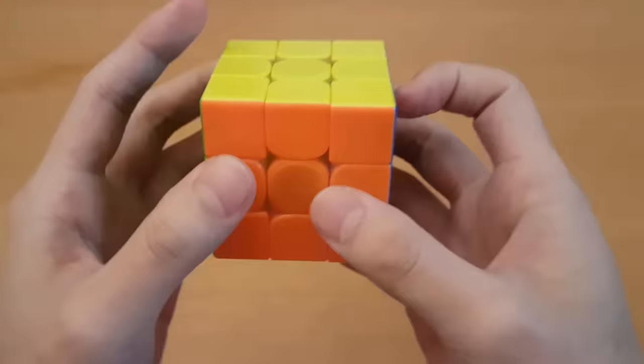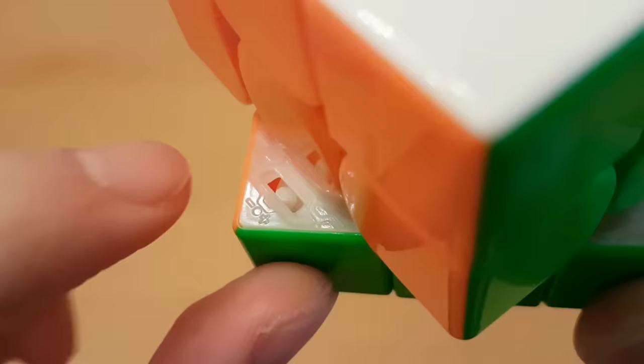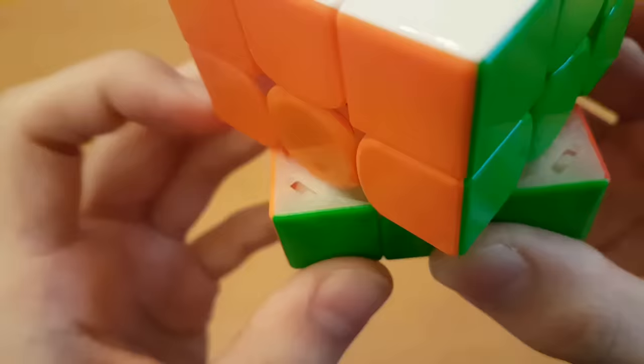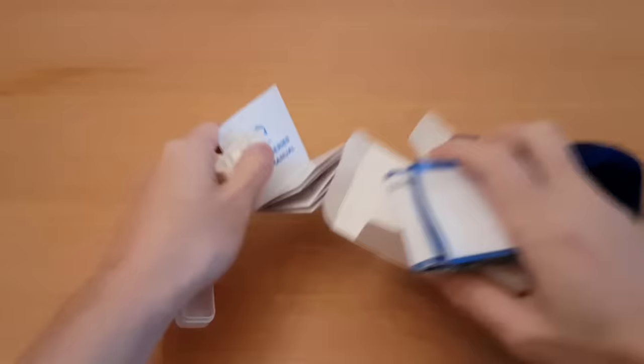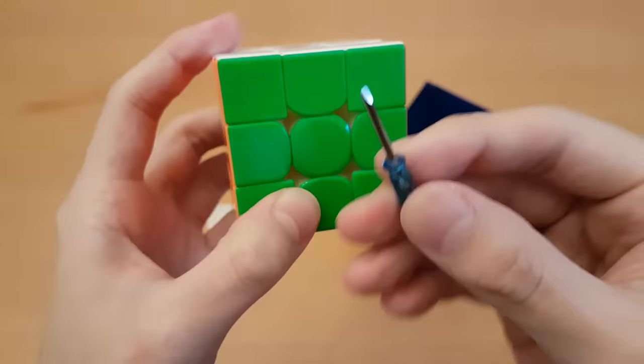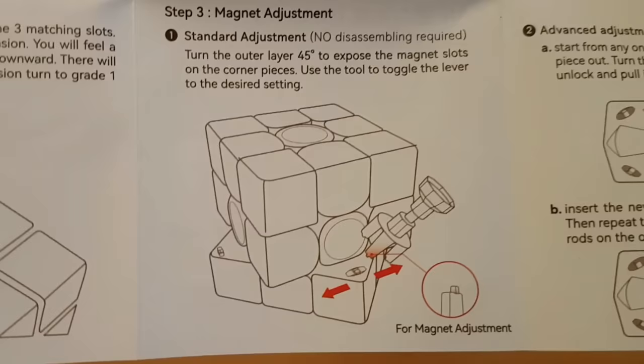And finally, at least I hope finally, is the magnet adjustment. This changes how strong the magnets are between the corner and edge pieces. And there are three settings. Right here there's a minus on the left and a plus on the right, so the strong magnets would be on this side. And I don't think I'll be able to move it back. Yeah, I don't think I received anything to help me change the magnets. The thing I got before was this. This is a very small flathead screwdriver that makes changing the setting extremely easy. The instruction says to use this thing.